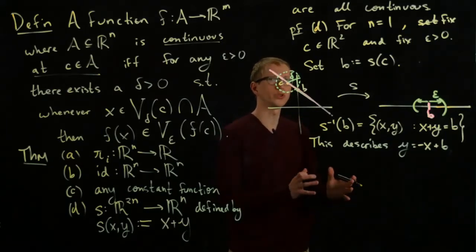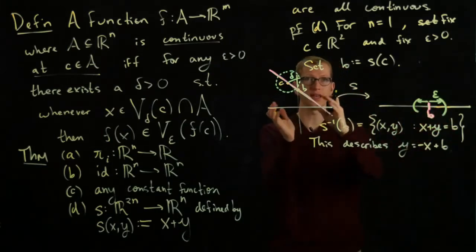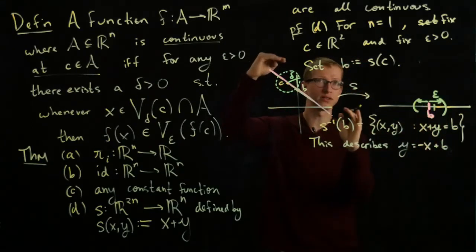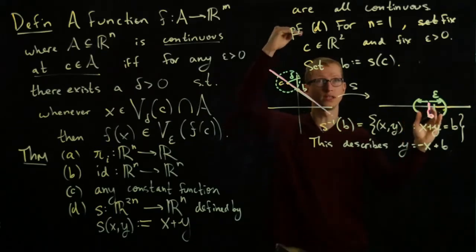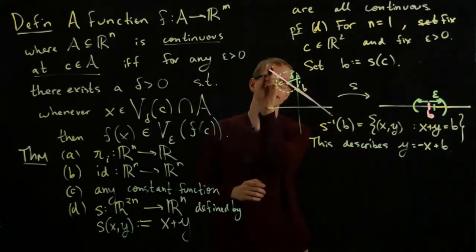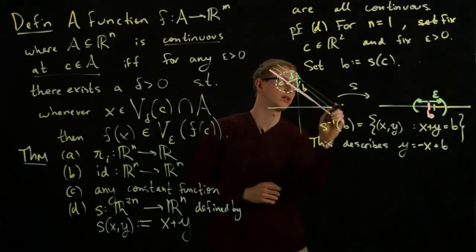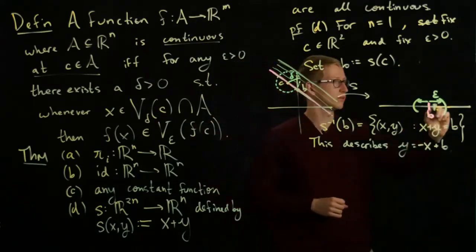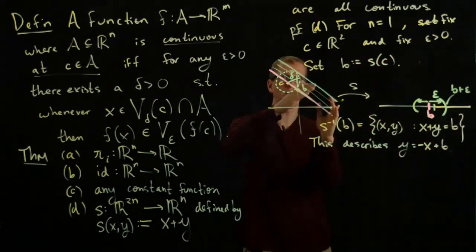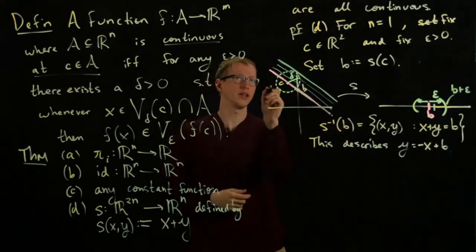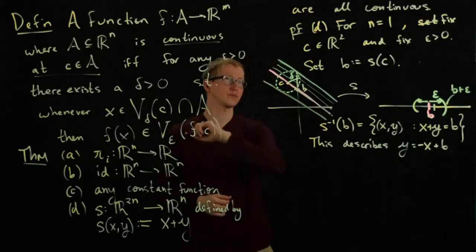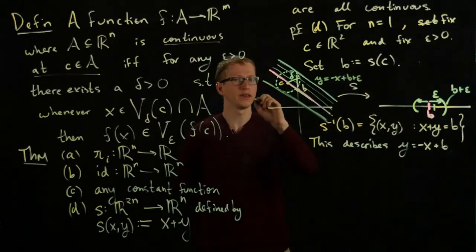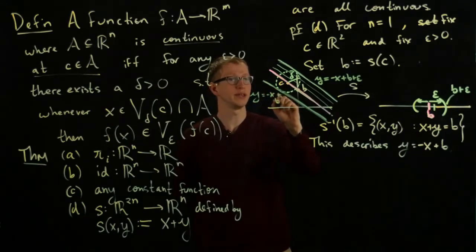And what we'll do to figure out what delta should be is we'll take the inverse image of this entire open set and see where it gets mapped to. Well, if you just think, any point near b is going to get mapped to exactly another one of these lines just shifted slightly above, because the y-intercept is increasing, so this line is going to be going higher and higher. So we'll get a sequence of lines like this as we move, as we increase a little bit past b up until the point we reach b plus epsilon. So this is going to be, let's say, b plus epsilon. And look at the inverse image of that point, and that's this straight line. We can go in the other direction and also look down, and we'll get this line here. So this line is y equals negative x plus b plus epsilon, and this line here is y equals negative x plus b minus epsilon.